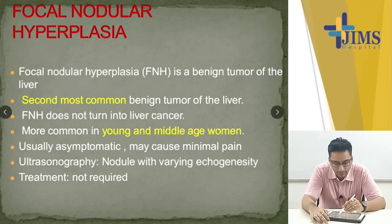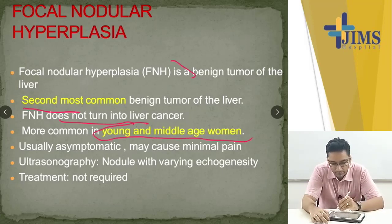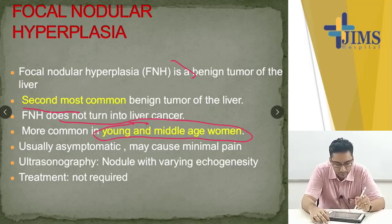FNH (focal nodular hyperplasia) is a benign tumor, the second most common. It does not turn into liver cancer. It is mostly found in young and middle-aged women. Treatment is not required.